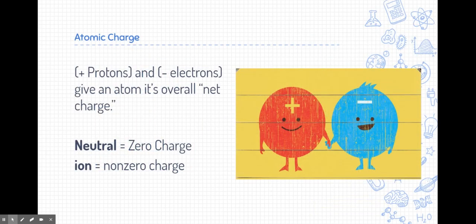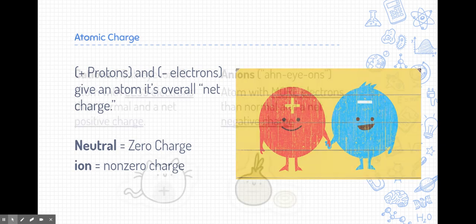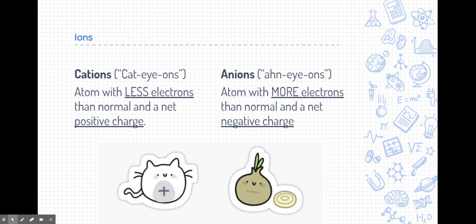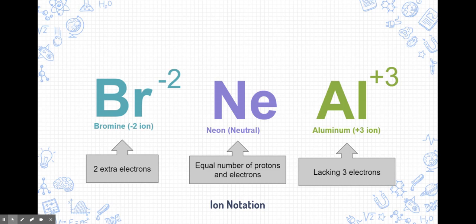Let's talk about atomic charge. Atoms get their charge from their protons, which are positive, and the electrons, which are negative. These give the net charge of the atom. Now, typically, we say an atom is neutral if it has zero charge, if there's equal numbers of protons and electrons. But we call an atom an ion if it has a non-zero charge, either positive or negative. In fact, let's talk about the different types of ions. An ion is a cation if it has less electrons than normal and a positive charge. An atom is called an anion if it has more electrons than normal and a net negative charge. I like to remember cations because of cats. Cats have paws, just like cations have positive charge.